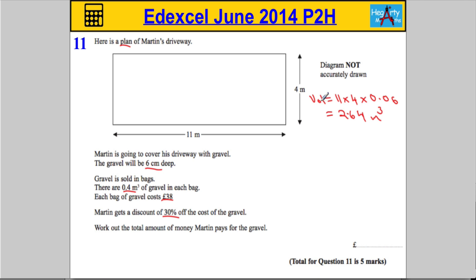Okay, so that's the volume of the drive. Now in order to work out how many bags, I'm going to have to see how many times I can fit 0.4 into 2.64. So the number of bags is going to be found by doing 2.64 divided by 0.4. I'm actually going to move this a little bit just so that it fits in nicely.